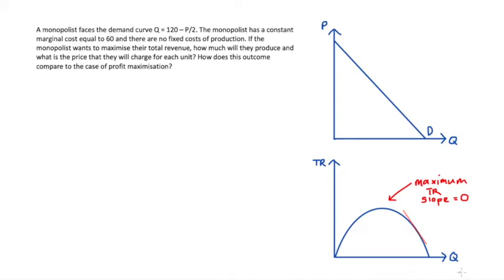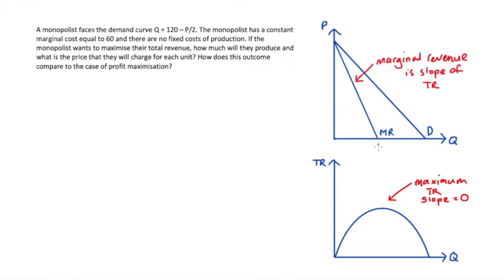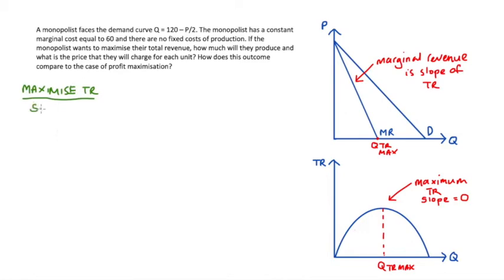The slope of the total revenue function is what we call marginal revenue, which is the derivative of our total revenue function with respect to quantity. The marginal revenue function has a corresponding shape. I have another video that goes through all the theory about why the curves have the shapes that they do — I'll link to that in the description. The key point is that the quantity which maximizes total revenue is where the slope of the total revenue function equals zero, which corresponds to where marginal revenue equals zero.